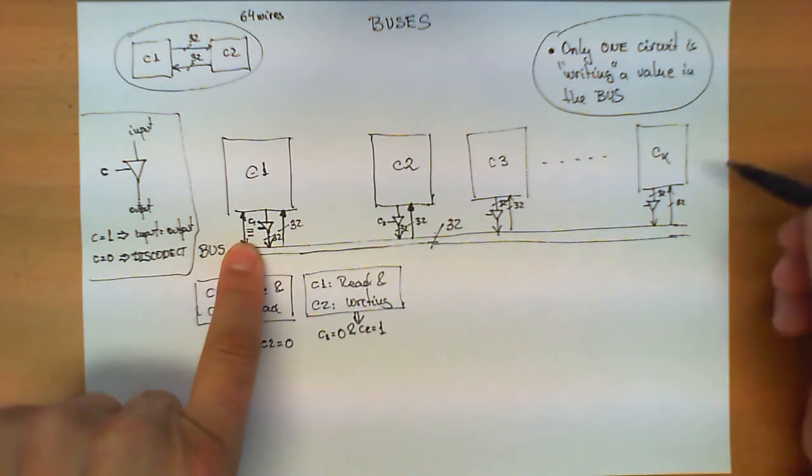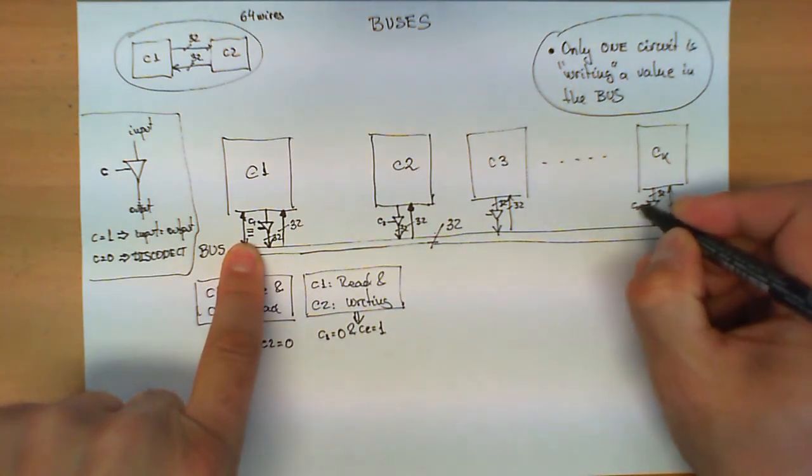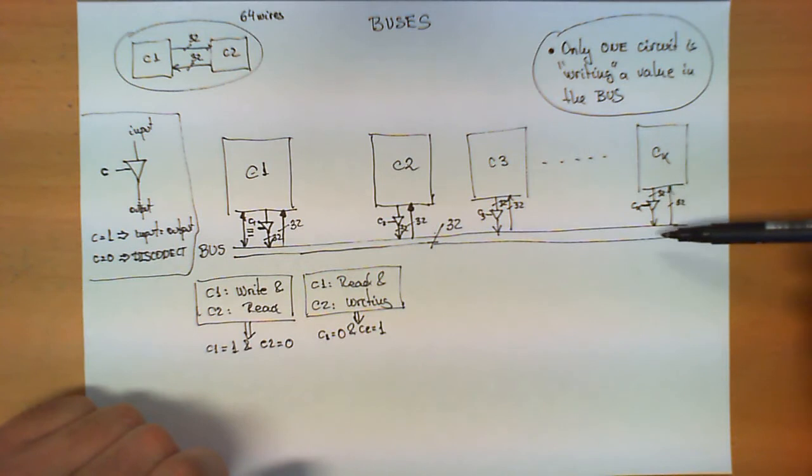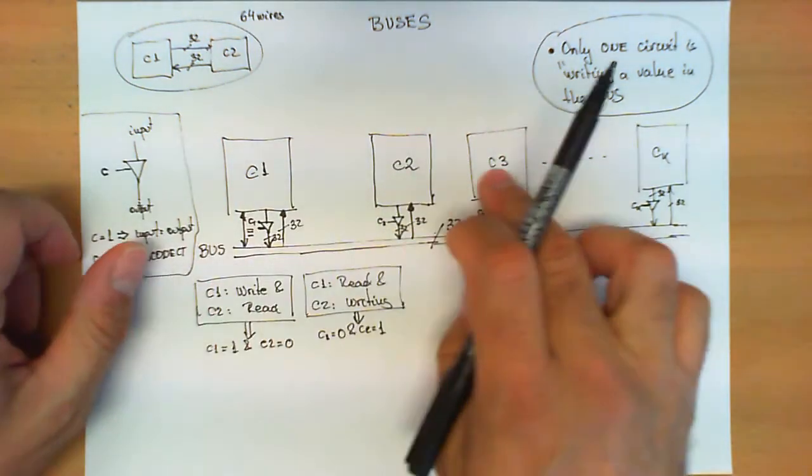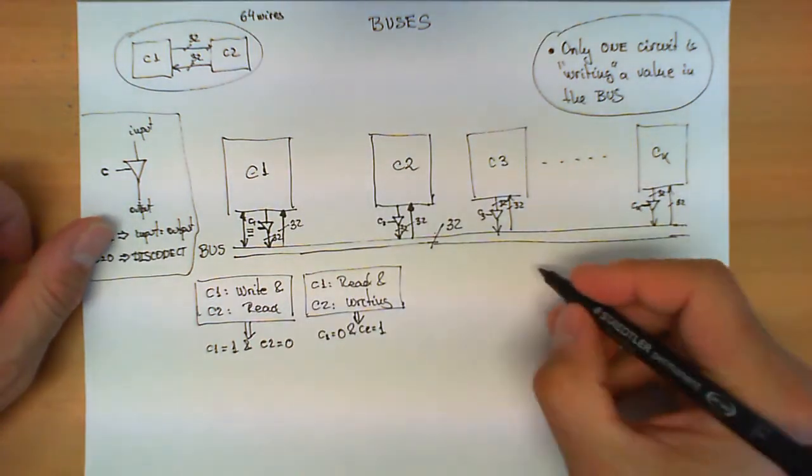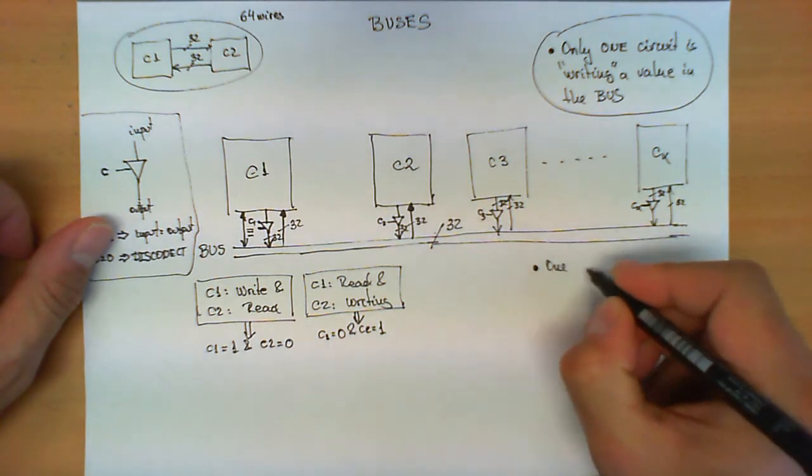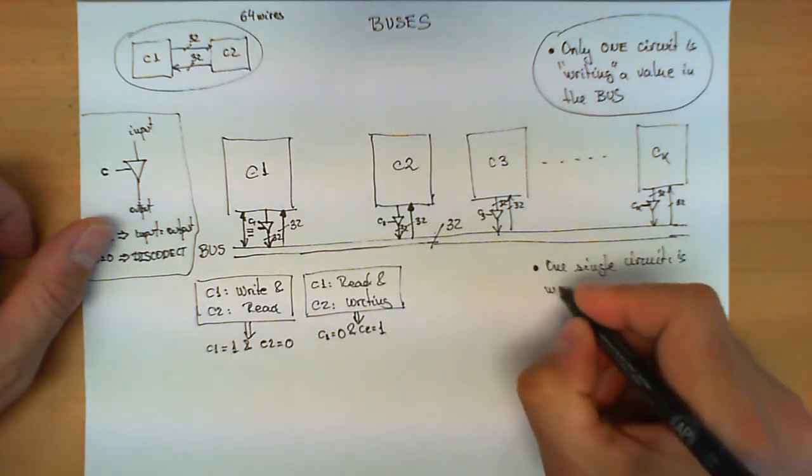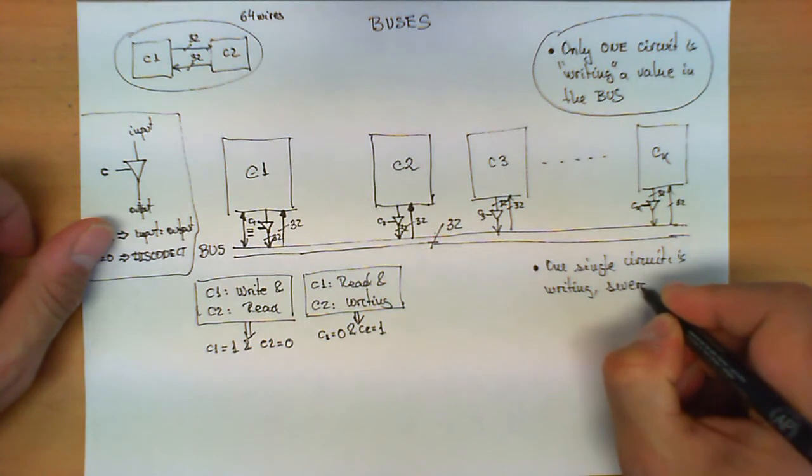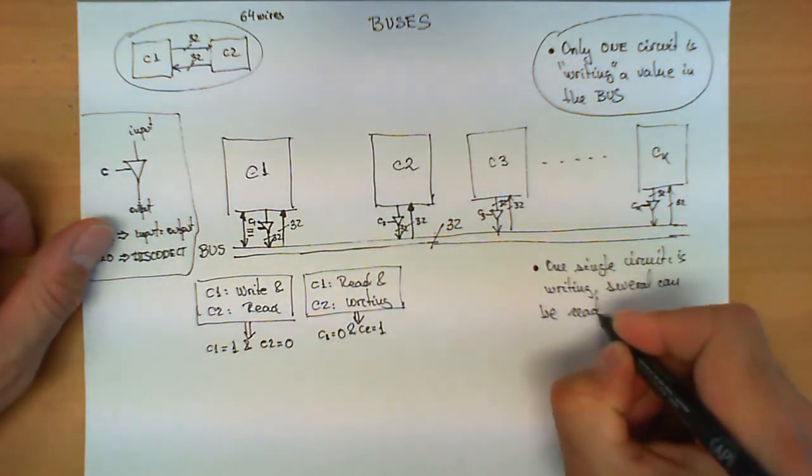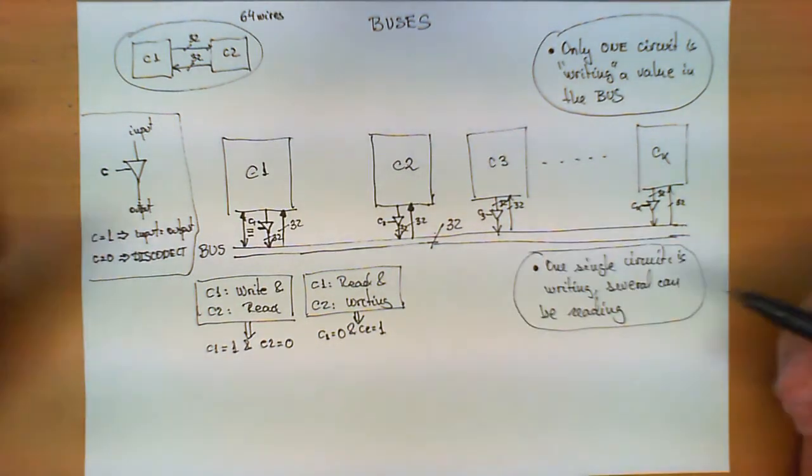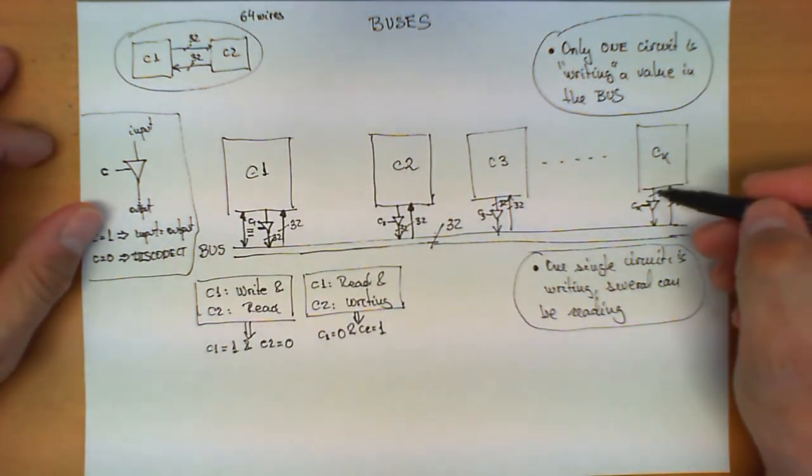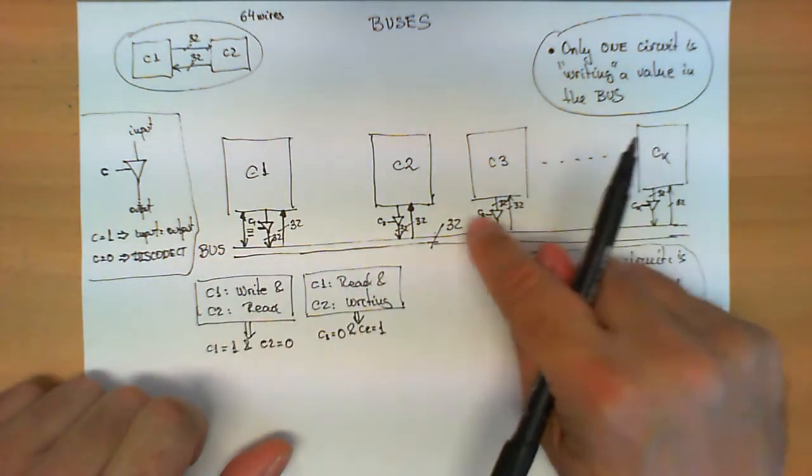In any case, if one of these devices can communicate a value to another device, the most important thing is that device, the control signal of that device, let's call it CK here, C3 here, if this device sets the control signal CK to 1, the value of this circuit gets written into the bus and it gets transmitted to all the circuits, and each one of them can read the value. Therefore, another property of the bus is that one single circuit or one single unit is writing, several can be reading.